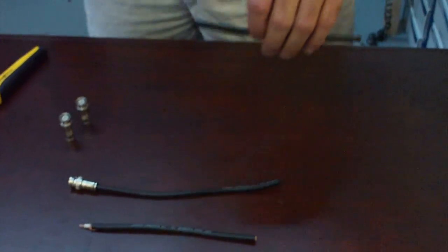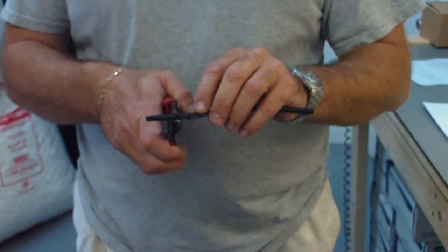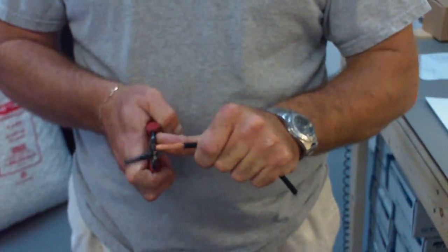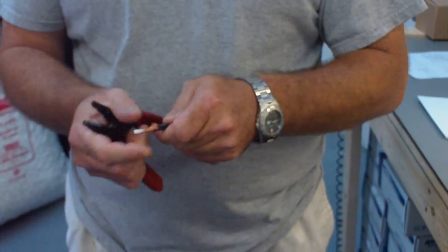This is a video demonstration for SecurityCameraKing.com on how to properly install a compression fitting for BNC connectors to RG59 cable.